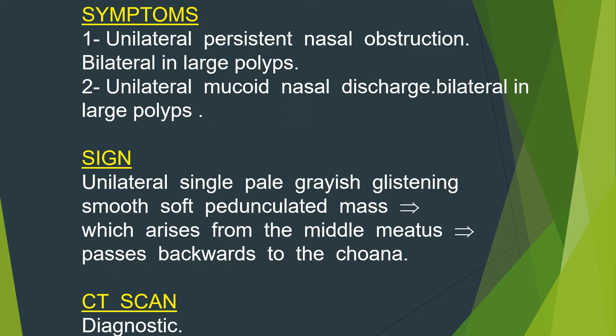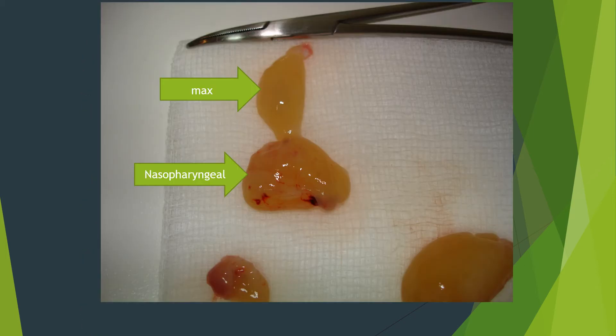Symptoms include unilateral persistent nasal obstruction, bilateral nasal obstruction due to nasopharyngeal obstruction, and unilateral mucoid nasal discharge. By examination, you will see a unilateral single pale grayish glistening smooth soft pedunculated mass which arises from the middle meatus, passing backward to the choana. CT scan will be diagnostic.